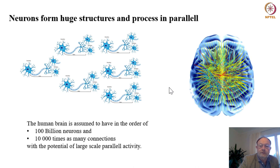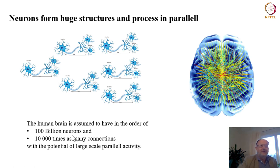All these atomic elements — the neurons — are connected in a huge network. To give you the order of complexity, there are said to be a hundred billion neurons in the human brain and ten thousand times as many connections. You can think of these connections as analogous to parameters in another system — so many parameters to adjust in order to define the functionality of the system.